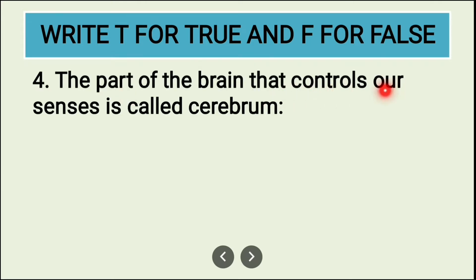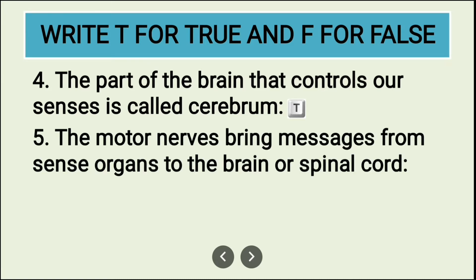Fourth question: the part of the brain that controls our senses is called the cerebrum. Is it right? Yes, it is right — the part of the brain that controls our senses is called the cerebrum, so this is a correct statement. Write T.